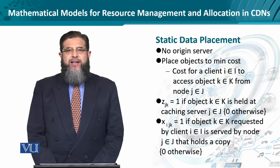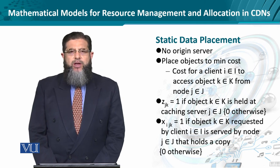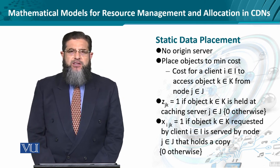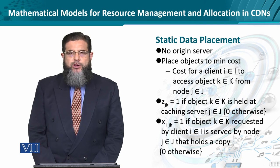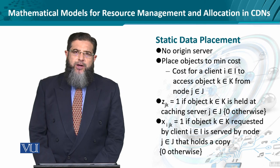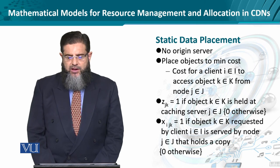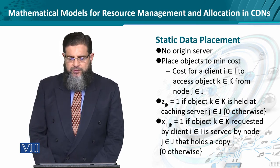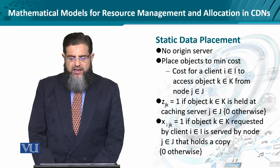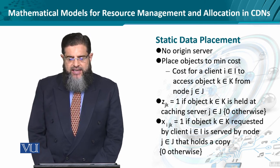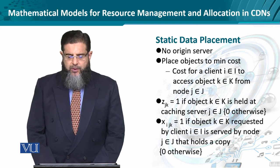Then we have static data placement, which is more of an integrated problem. Here we do not have the origin server; we are relying on the proxy server or caching server. The job is to place the object at various locations — the proxy or caching servers — to minimize the cost of a client accessing the object. If the object is held at the caching server, we define a binary variable z,j,k: for a given object k, if it is served by a caching server, the value is one; otherwise it is zero.